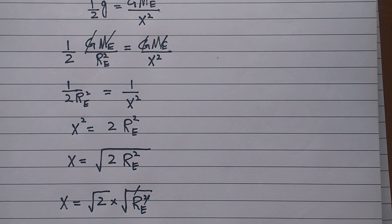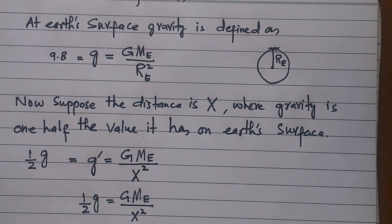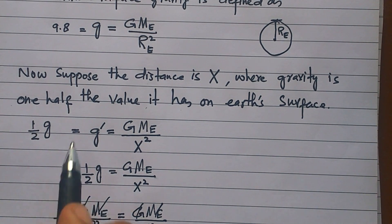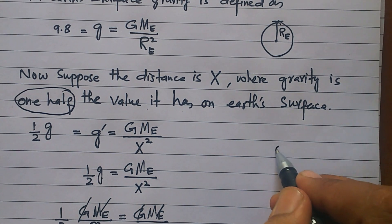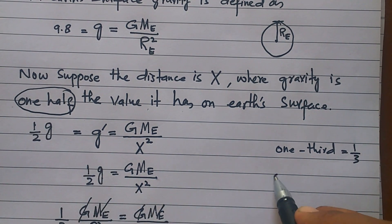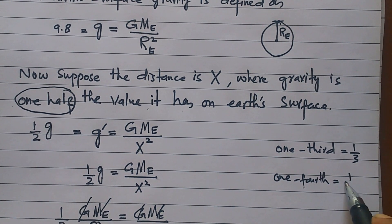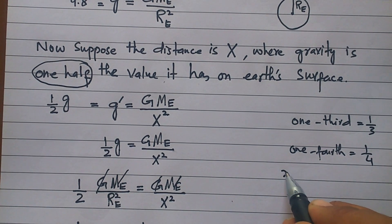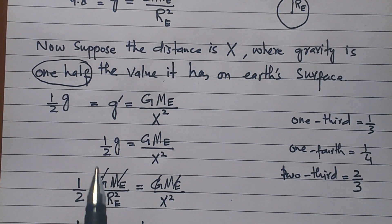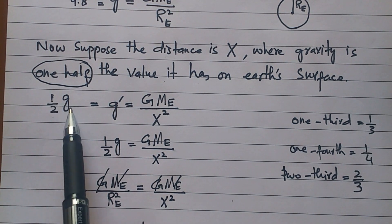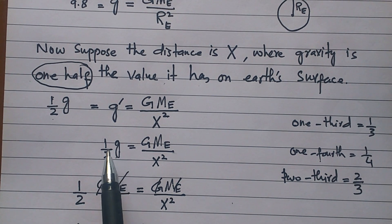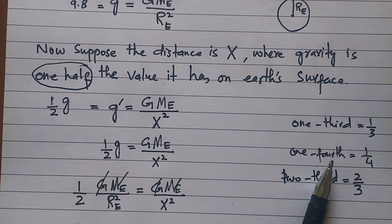This numerical can appear in exams. If the surface gravity is given, you find the distance for one half g, one third g, one fourth g, or two thirds g by substituting those fractions in place of one half. So just change this value in the formula accordingly. In my opinion, you can solve this numerical easily in the exam.